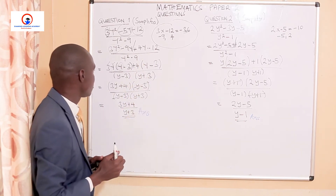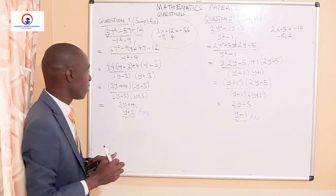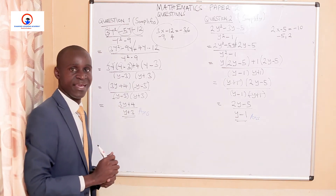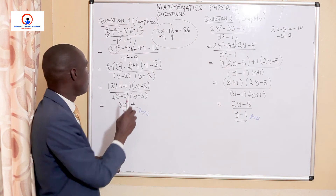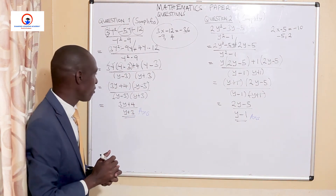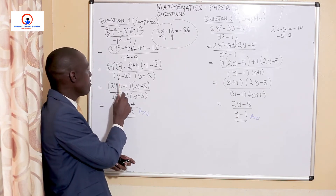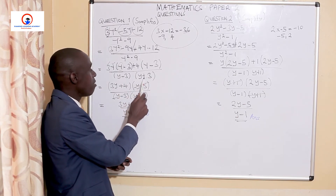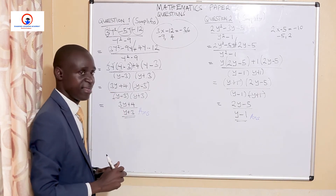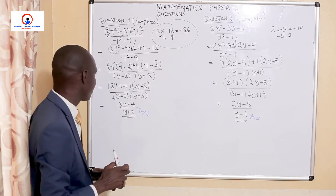So we have factorized the top part — the numerator has been factorized. Now we go to the bottom part, the denominator, which is a difference of two squares. y squared minus 9 is a difference of two squares. When we factorize it, we end up with two expressions: y minus 3 and y plus 3. After we factorize the denominator, we need to go back to the numerator and get the final factorization factors.